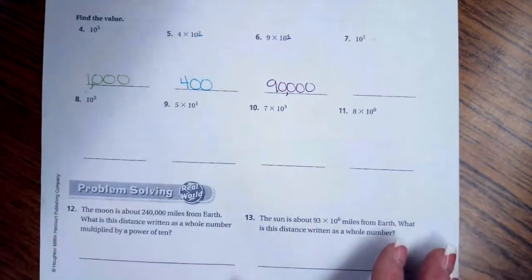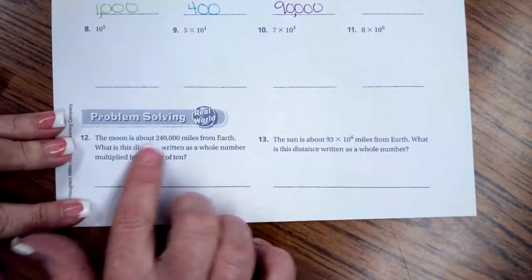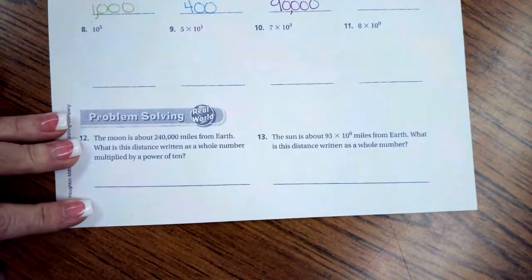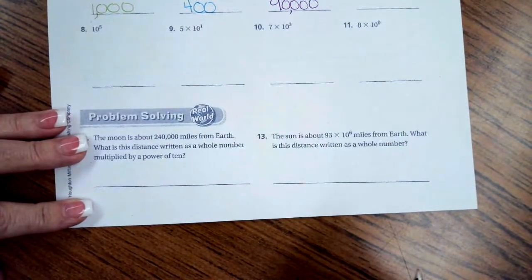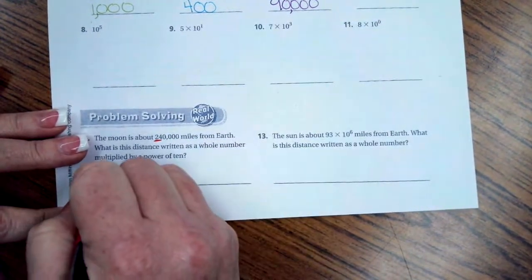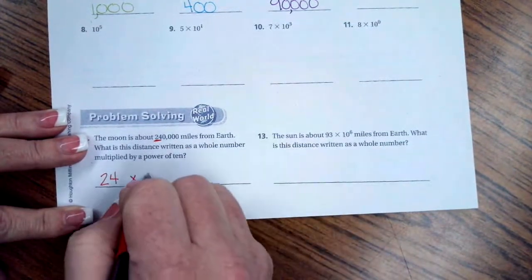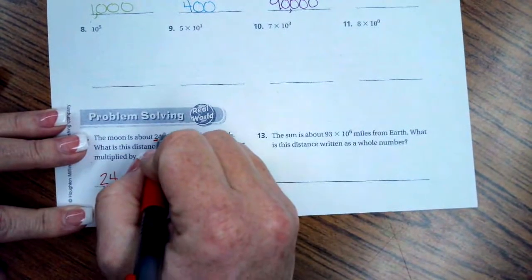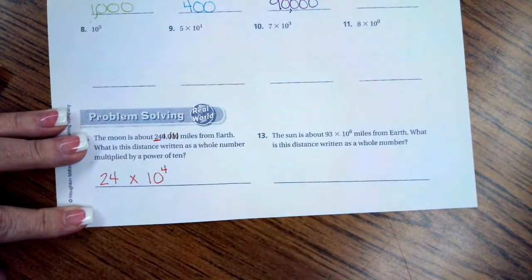We're going to go down and do number twelve. Number twelve says the moon is about 240,000 miles away from Earth. What is this distance written as a whole number multiplied by a power of ten? So 24 is going to be our first number, then we're going to say times 10, because that's always our base. And then we have one, two, three, four zeros—power of four.